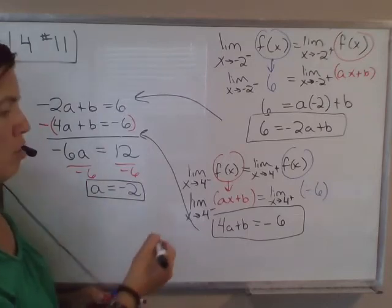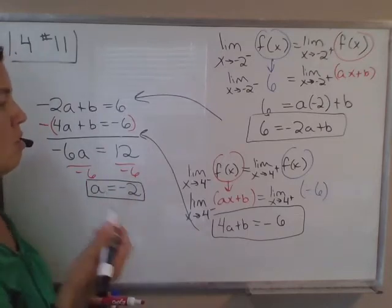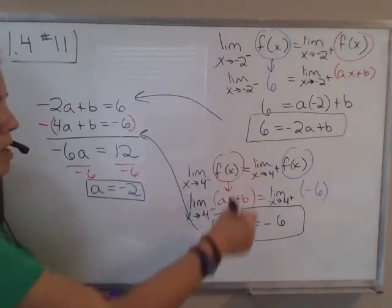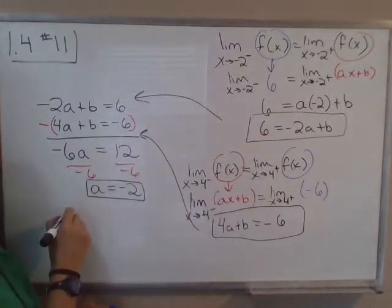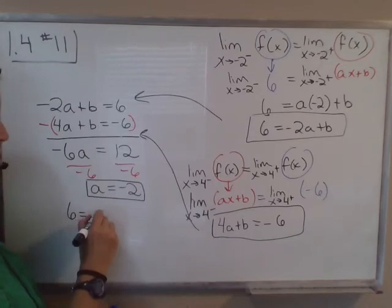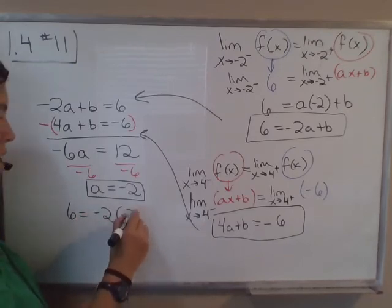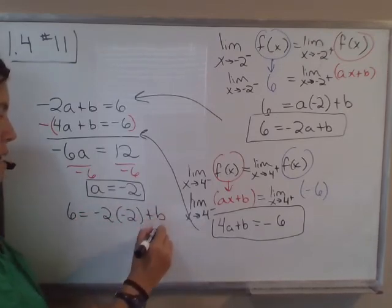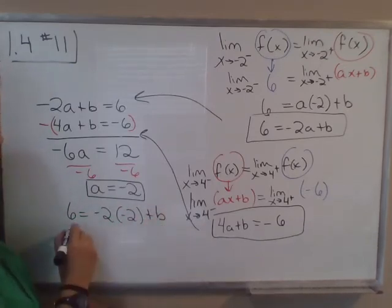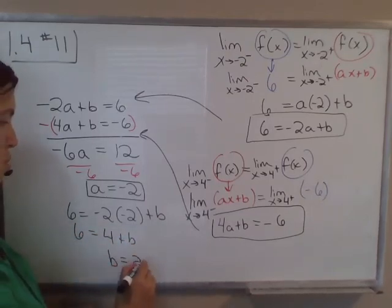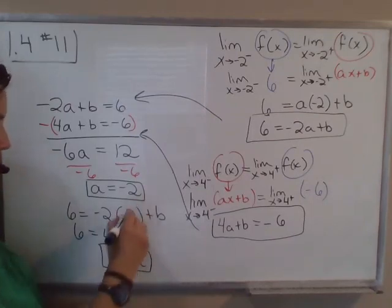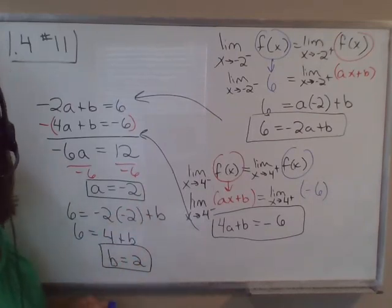In order to solve for b, substitute the value of a into the first equation. 6 equals negative 2 times negative 2 plus b, so 6 equals 4 plus b, so b equals 2. So a is negative 2 and b is 2.